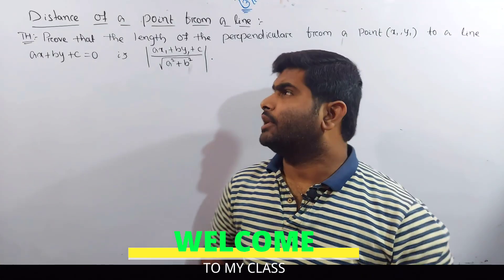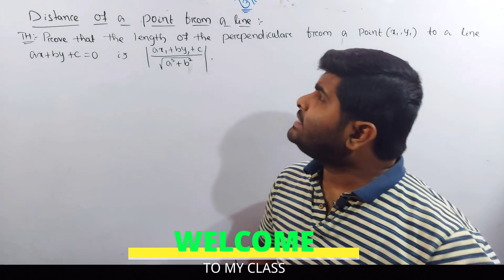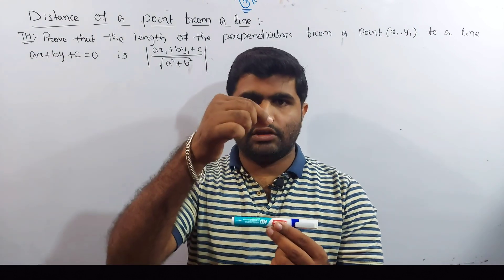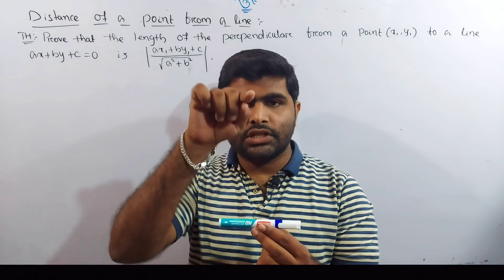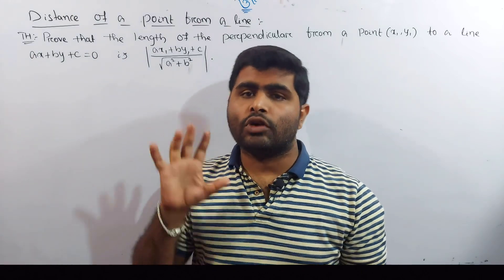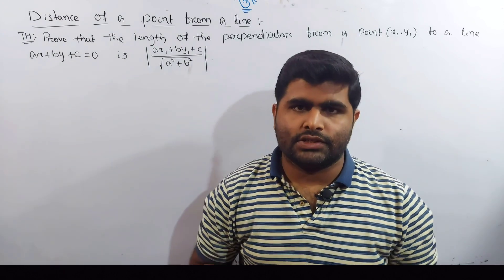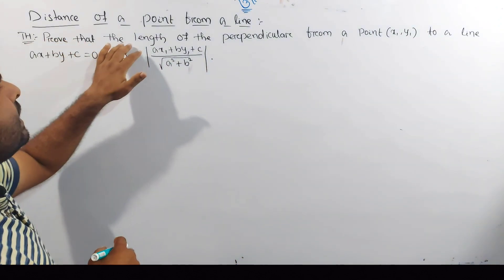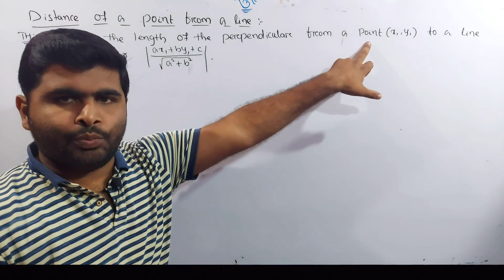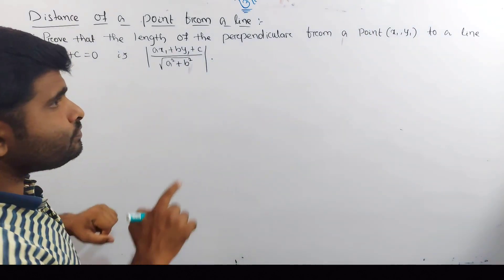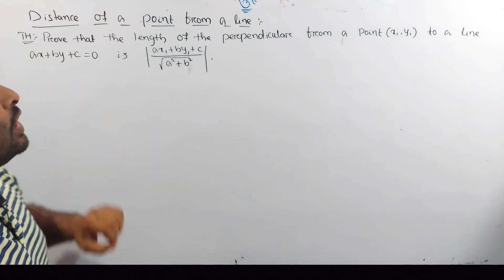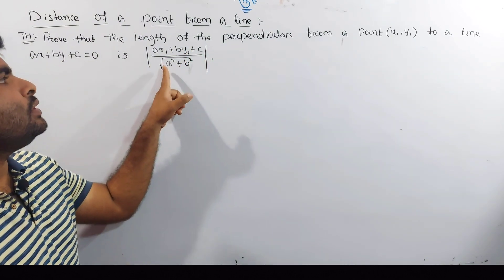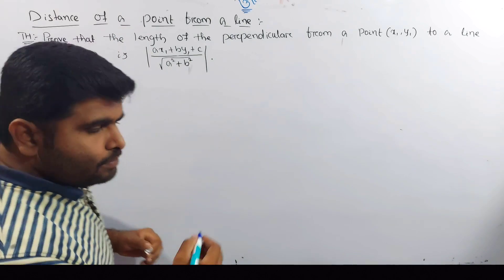Hello students, welcome to my class. Today we are going to see the distance of a point from a line. Let's see how we use the formula. First we have a formula. Let's start with the theorem: prove that the length of the perpendicular from the point to the line ax plus by plus c equals 0 is ax1 plus by1 plus c divided by root over of a squared plus b squared.